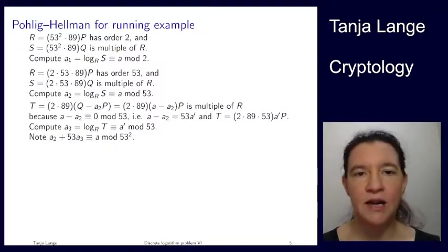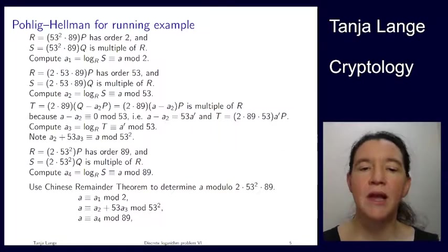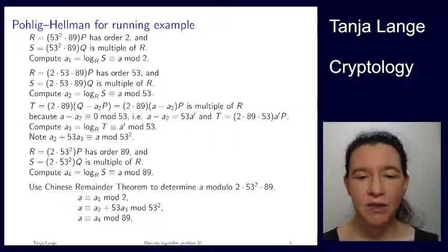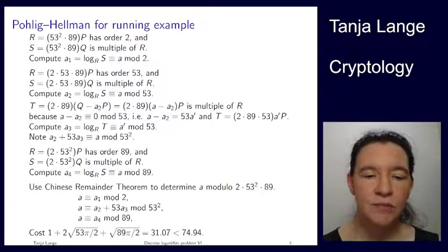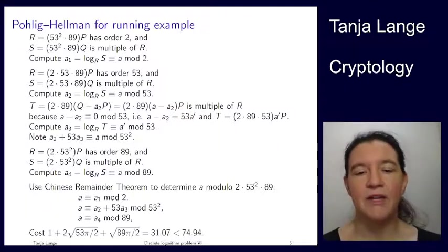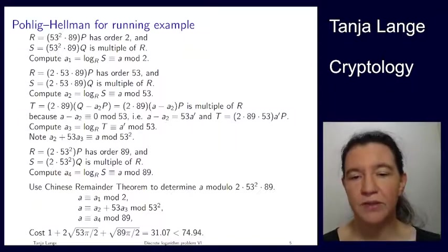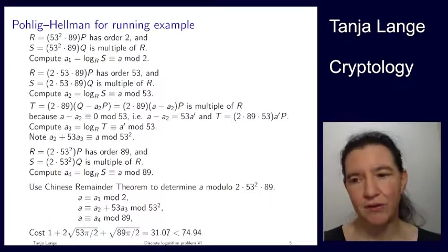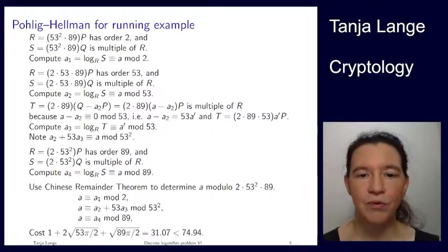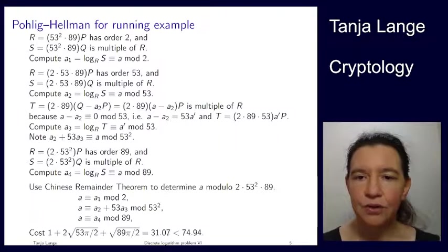The rest is just the same, because the 89 and the 2 appear with multiplicity 1. So for 89 we do the same. And now we have our Chinese remainder theorem, mod 2, mod 53², that's a novelty, and mod 89. At the cost, which is 2 × √53 × π/2. And when you calculate that number, it is only 31. So that's significantly lower than even the somewhat better version, the one with a brute force search. So this is what Pohlig-Hellman is doing for the running example. And then in the next lecture I'm going to show you what Pohlig-Hellman is really doing. Thanks.